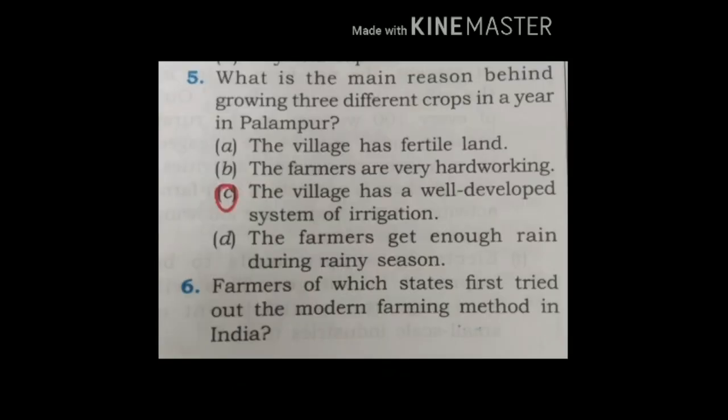Question 5: What is the main reason behind growing 3 different crops in a year in Palampur? The four statements are: The village has fertile land; The farmers are very hard working; The village has a well developed system of irrigation; The farmers get enough rain during rainy season. The correct option is C — The village has a well developed system of irrigation.